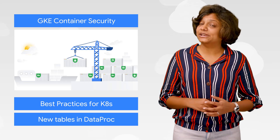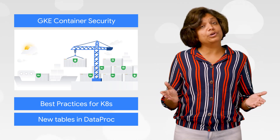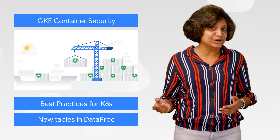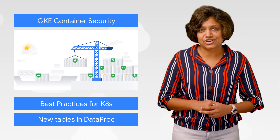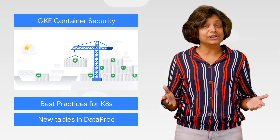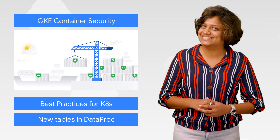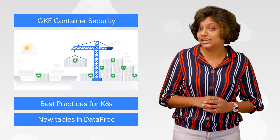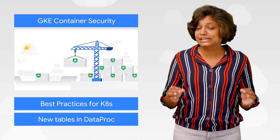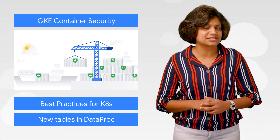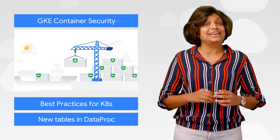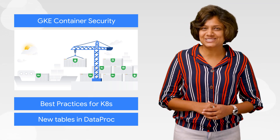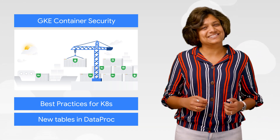As Google Kubernetes Engine moved from version 1.12 to 1.15 over the past year, we made several security changes to the platform to improve security behind the scenes. Changes like paring down controls to only what your application actually needs and improving the defaults. And of course, maintaining the GKE hardening guide so that you can always find the best advice for the security of your clusters.